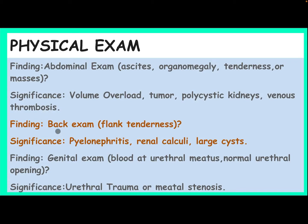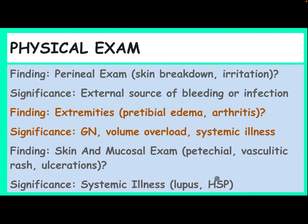Flank tenderness on back examination is significant for pyelonephritis, renal calculi, or large cyst. Examination of the genitalia — blood at the urethral meatus or abnormal urethral opening — is significant for urethral trauma or meatal stenosis. Perianal examination showing skin breakdown or irritation suggests an external source of bleeding or infection. Extremity examination showing peritibial edema or arthritis is significant for glomerulonephritis, volume overload, or systemic illness.